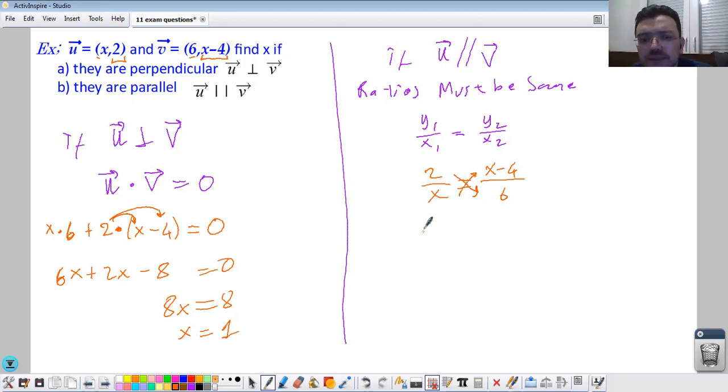So 2 times 6 is 12 equals x times x, x squared, x times minus 4, minus 4x. You'll have 0 here, x squared minus 4x, and 12 moved to the other side is minus 12.